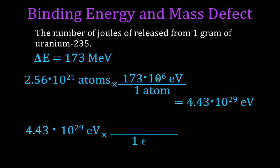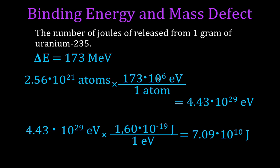We were asked to find the energy in joules. Using the conversion that one electron volt equals 1.60×10⁻¹⁹ joules, we find that the energy released from one gram of uranium-235 — with all those nuclei splitting into barium and krypton — is 7.09×10¹⁰ joules.